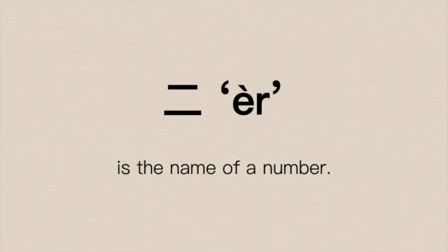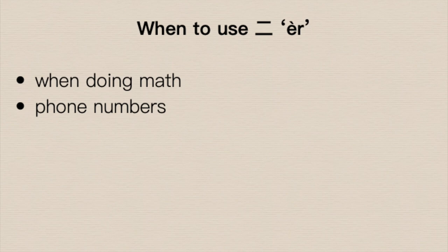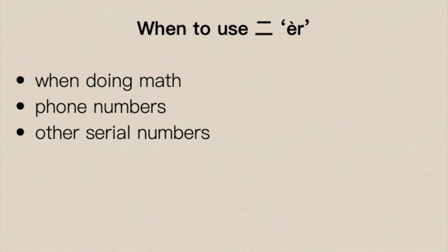二 is the number two. It is the name of a mathematical concept — the name we give to that second whole number. We use it to refer to things like two plus two equals four. When we're talking about math, we use 二. When we're giving digits of a phone number, we're going to use 二. When we're talking about any other serial number, or reading something off digit by digit, we're going to use 二. It's just the name we've ascribed to the number two.